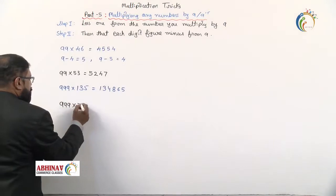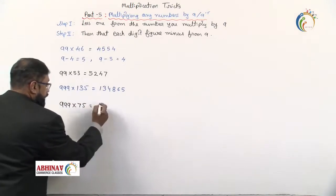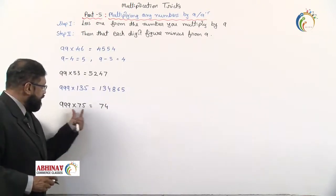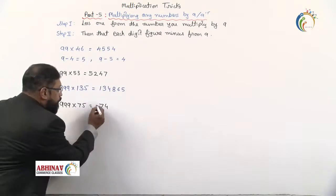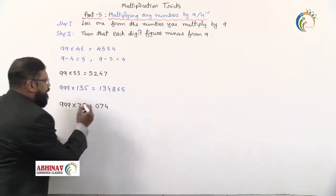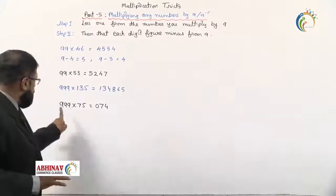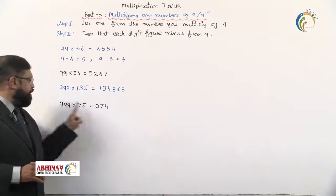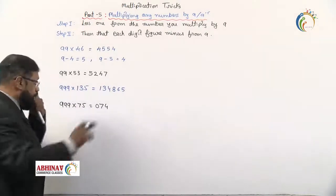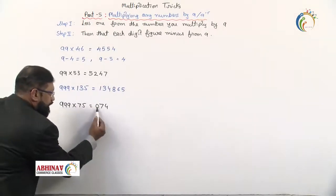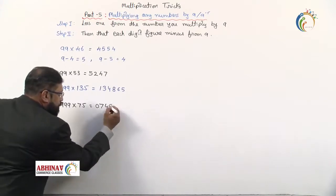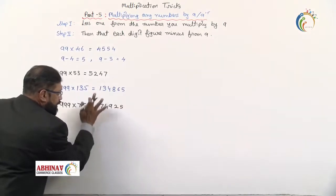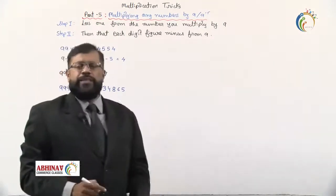Now try 999 × 75. Subtract 1 from 75 to get 74. But be careful — 999 has 3 digits and 75 has only 2 digits. To make the digits equal, add a leading zero to get 074. Subtract each digit from 9: 9 minus 0 is 9, 9 minus 7 is 2, 9 minus 4 is 5. Cancel the padding zero — the answer is 74,925.